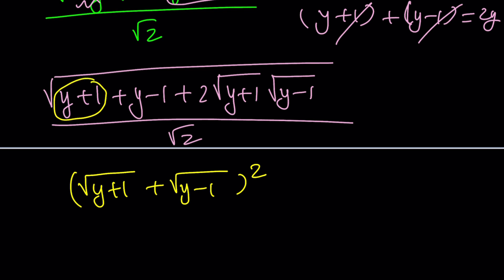This is square root of y plus 1 squared. This is square root of y minus 1 squared. And this is like 2 times ab. In other words, this is like a squared plus b squared plus 2ab, which is, again, a perfect square. Okay? A lot of perfect squares, and it's just perfect.